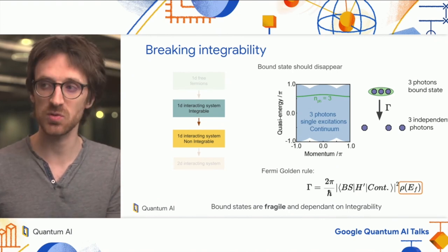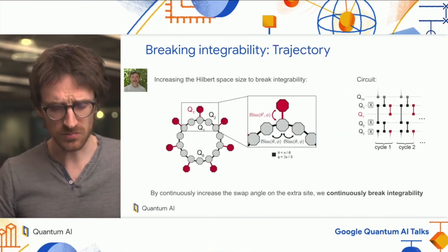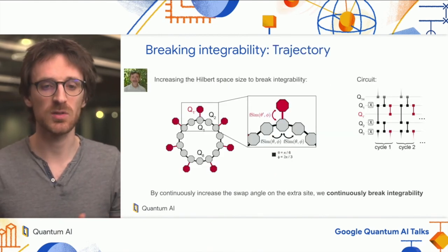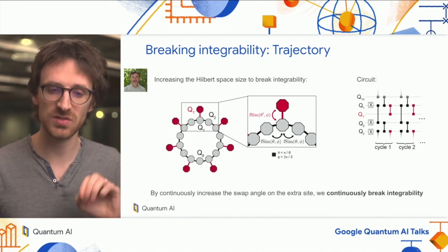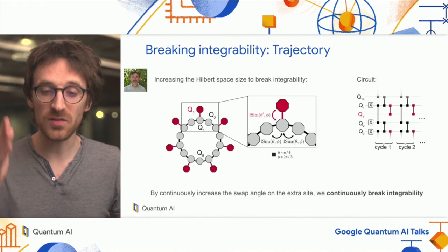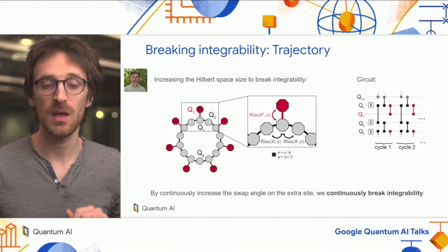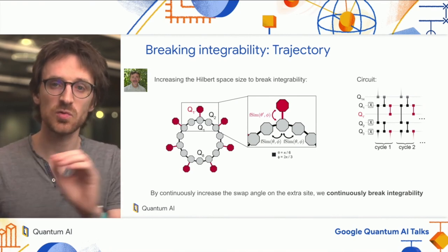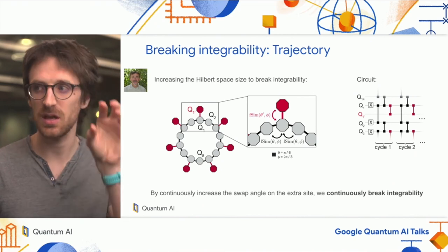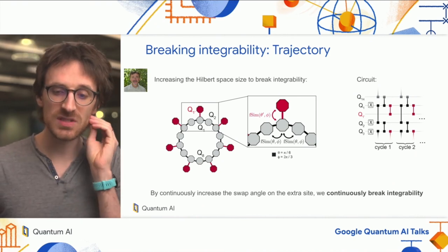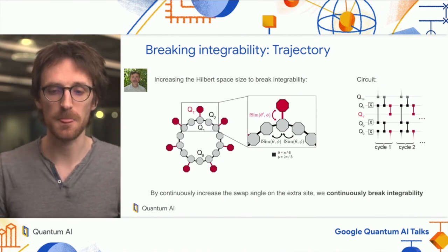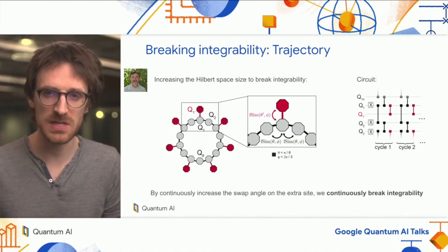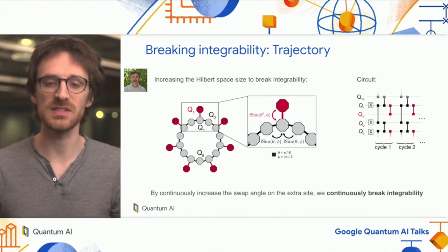To break integrability, we increase the Hilbert space by adding a site every other site, and add an extra layer of FSim gates in red, where we can vary the swap angle between the main chain and the extra site. This allows us to continuously break integrability in our system and see how the bound states disappear.